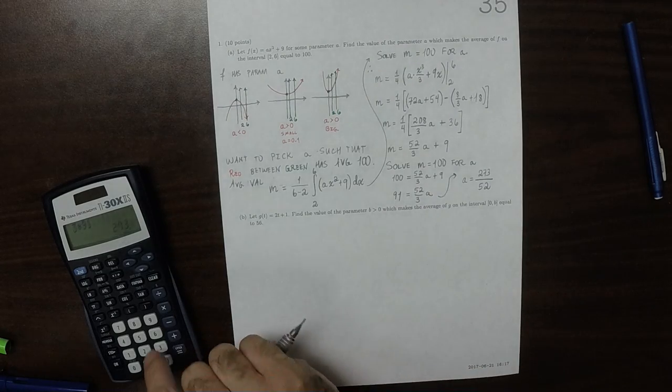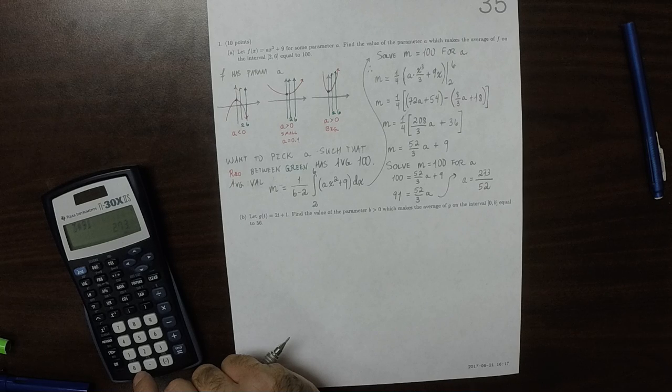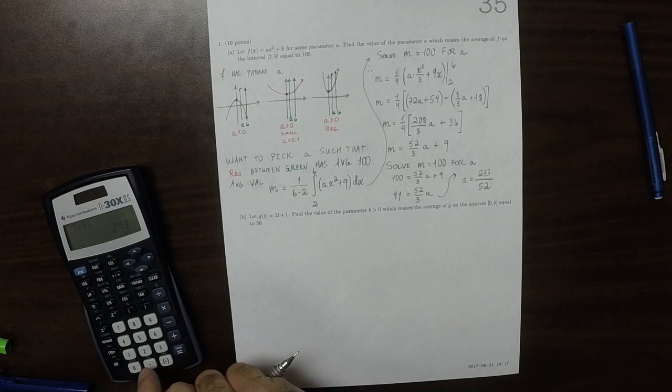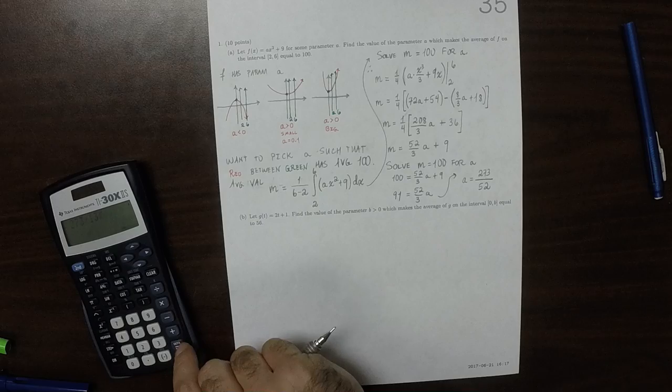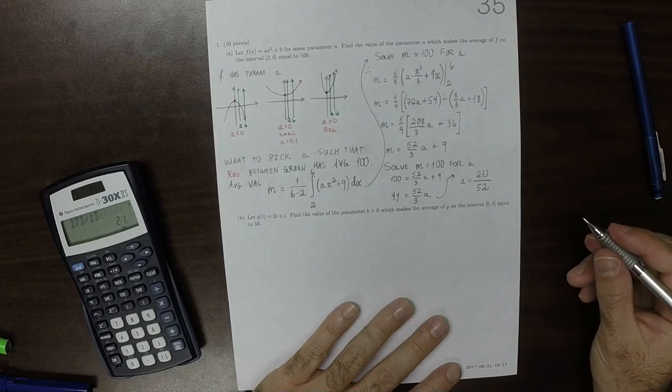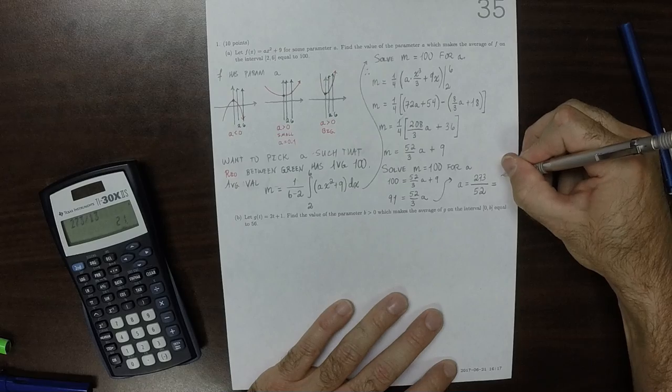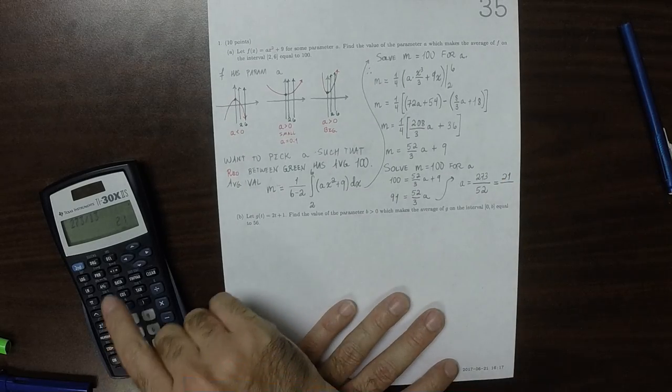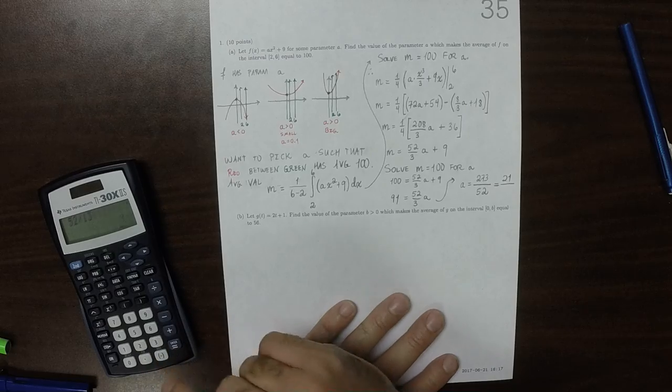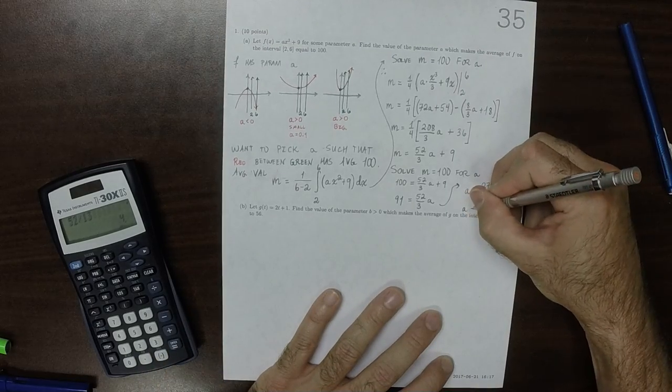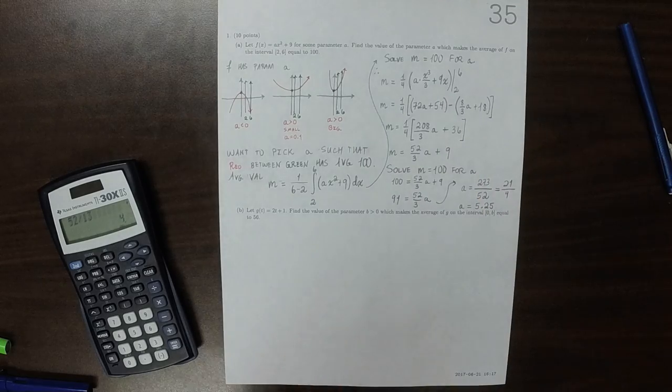So 273 over 52, do those have any common factors? They have a common factor of 13. So that would be 21, and then divide by 4. So I guess you could write this as 5 and a quarter. That's the value of A.